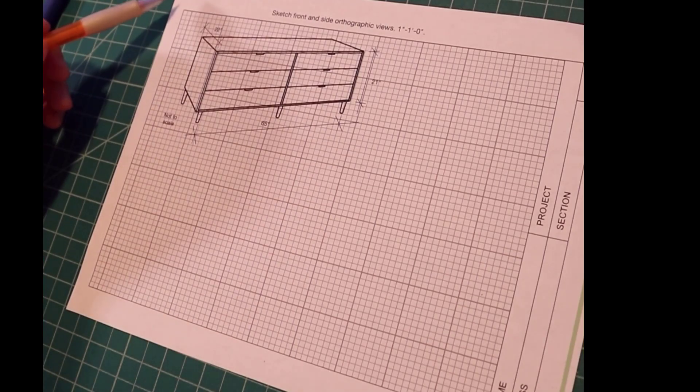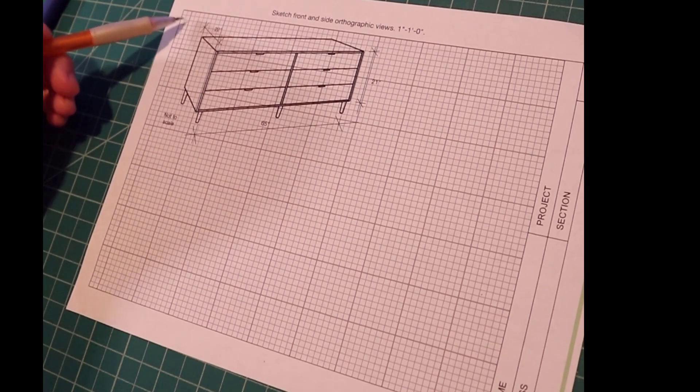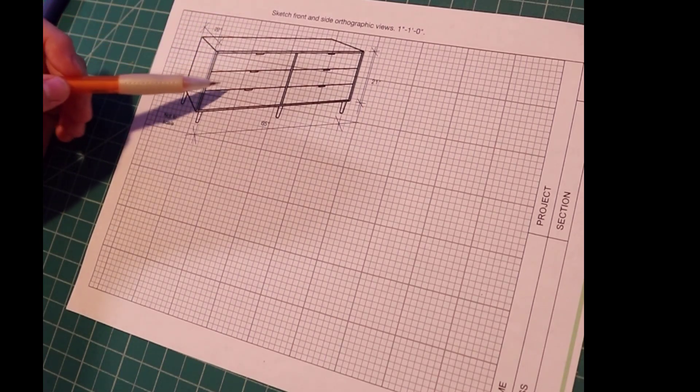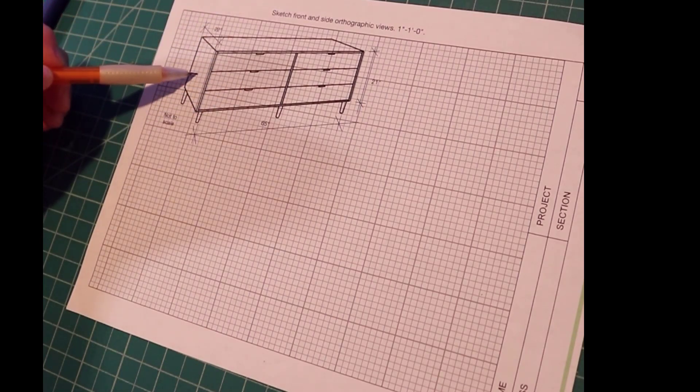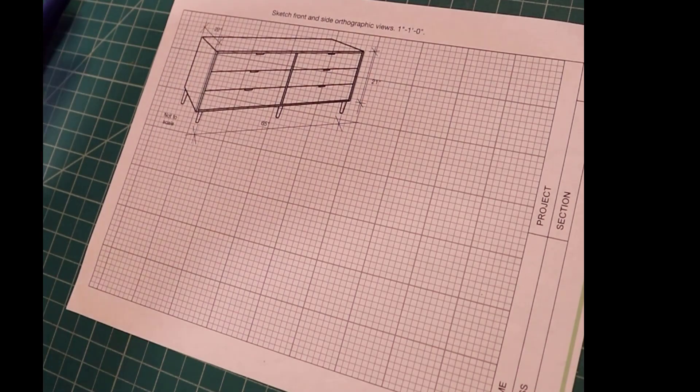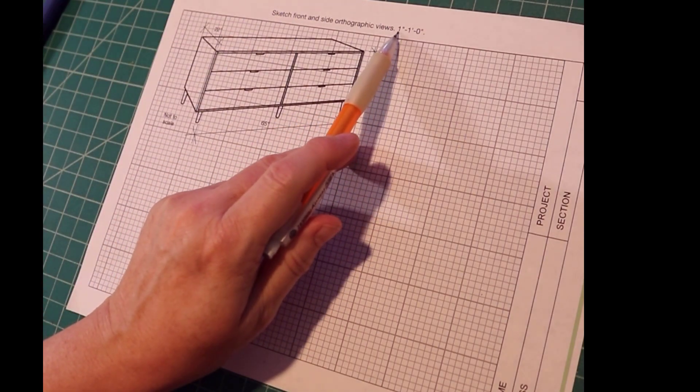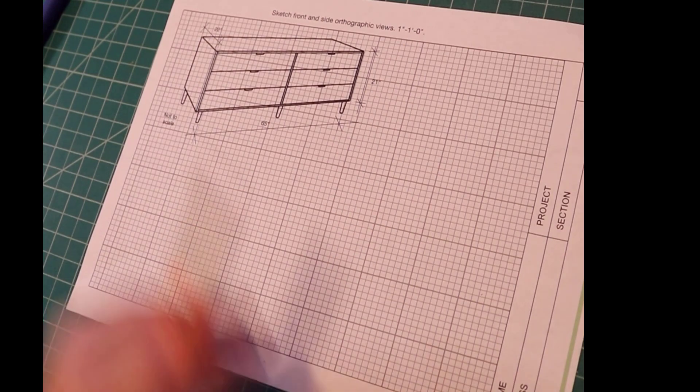In this video, we'll sketch orthographic views of the front and side of this dresser. The scale is 1 inch equals a foot.